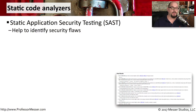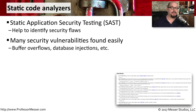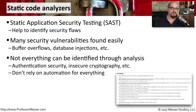If you're a developer who would like to test your code to see if there are any security vulnerabilities, you can run a test using a static application security testing tool, or SAST. The static code analysis tool will go through your source code and try to find vulnerabilities such as buffer overflows and database injections.